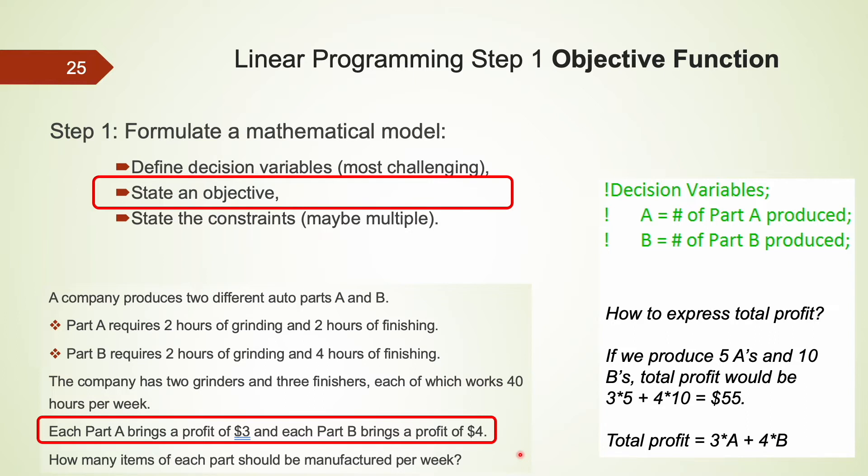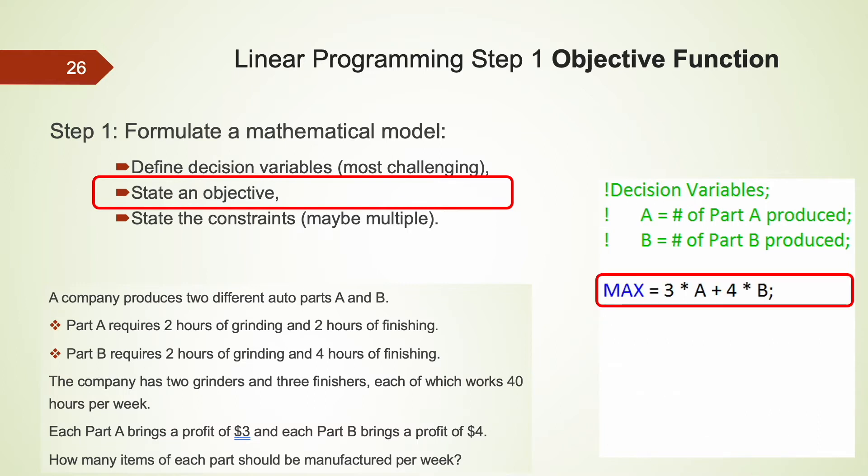Just assume that we produced 5 units of A and 10 units of B. The total profit is going to be 3 multiplied by 5 plus 4 multiplied by 10, that's $55. If we produce A units of A and B units of B, the total profit should be 3A plus 4B. The objective function is to maximize the total profit. So now we can state the objective function as max equals to 3A plus 4B. Make sure you capitalize max and end this line with a semicolon.